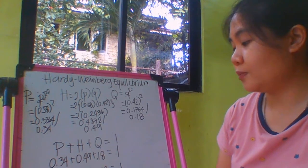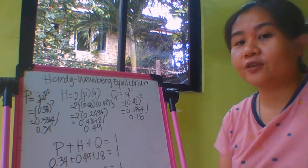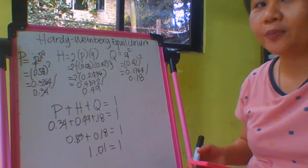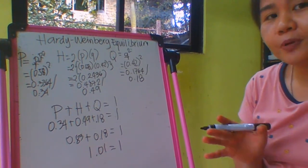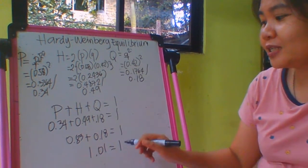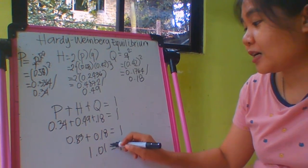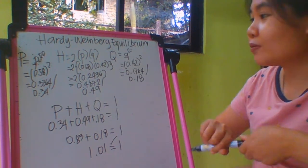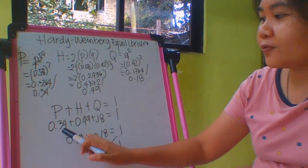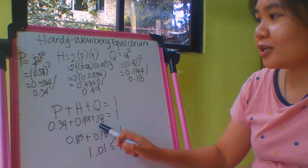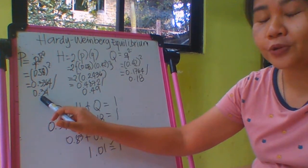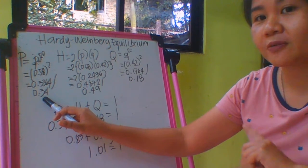So the value for this one is 1.01. You might be wondering, is this still correct? Yes, it's still correct because remember we rounded the values for P, H, and Q. We rounded it off to the nearest hundredths place in decimal.